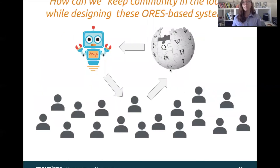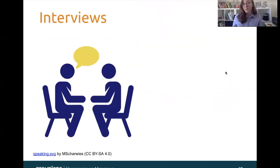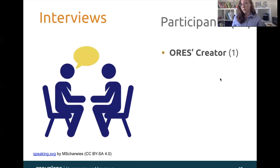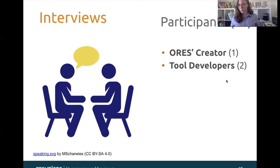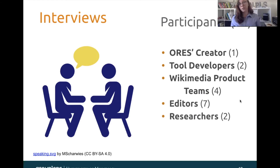So again, the question here is how can we keep community in the loop while designing these types of ORS-based systems and tools? We used qualitative methods to gather perspectives from five stakeholder groups. Specifically, we conducted semi-structured interviews with 16 participants, including the creator of ORS himself, two tool developers building open source tools that call ORS to generate predictions, four members of the Wikimedia product teams, seven editors, and two researchers who also use ORS regularly in the line of their research on Wikipedia.